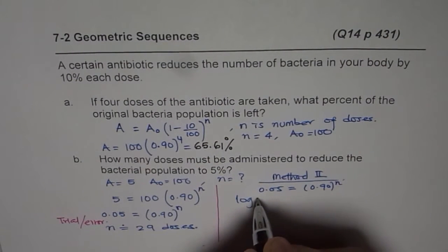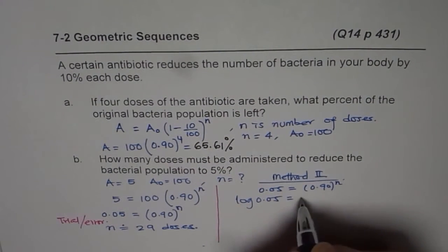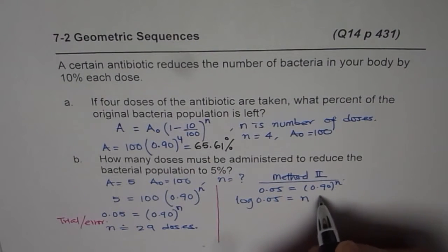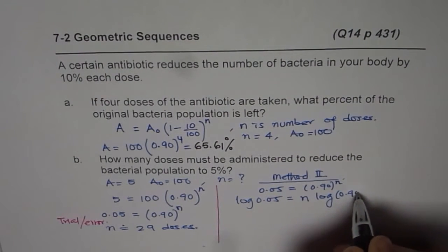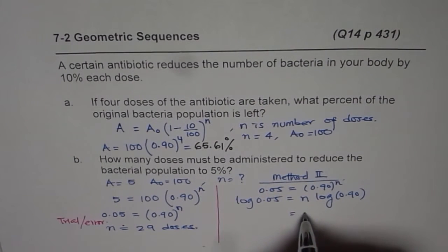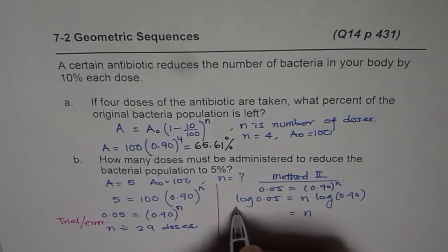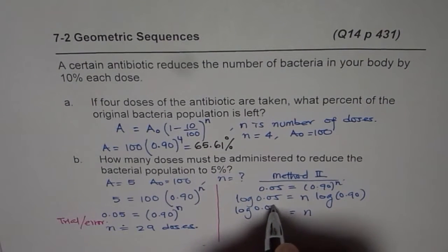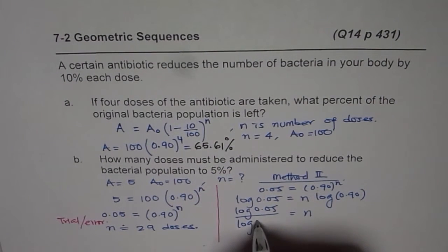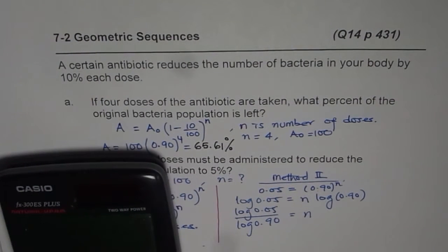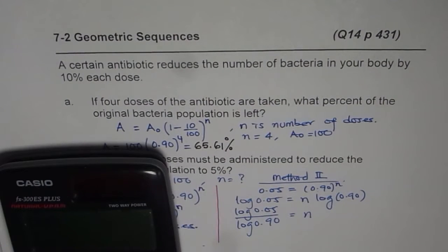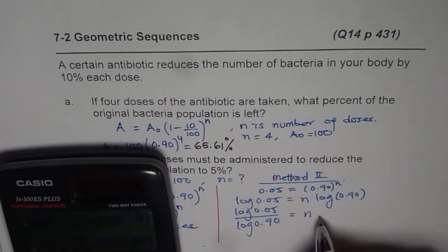So n will be the ratio of these two logs. It is log of 0.05 divided by log of 0.90. We'll again use the calculator and calculate this log. So log of 0.05 divided by log of 0.9 equals how much? It gives us n is equal to approximately 28.43.